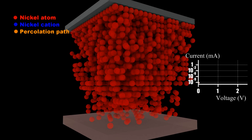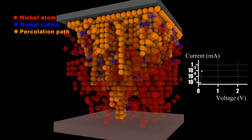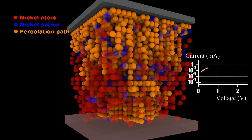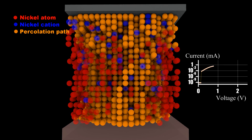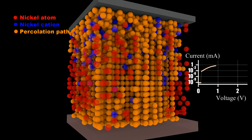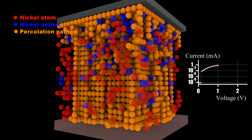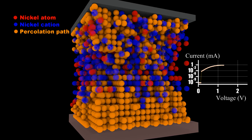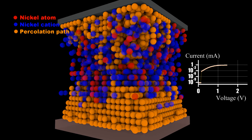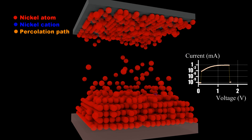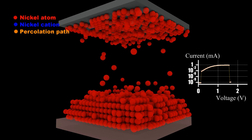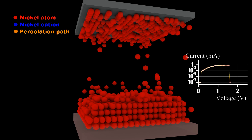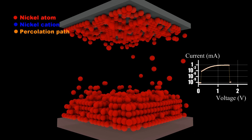The reset process is produced because of the Joule heating produced within the filament and the acceleration of the process involved in the nickel atom oxidation and the movement of these cations after their oxidation.